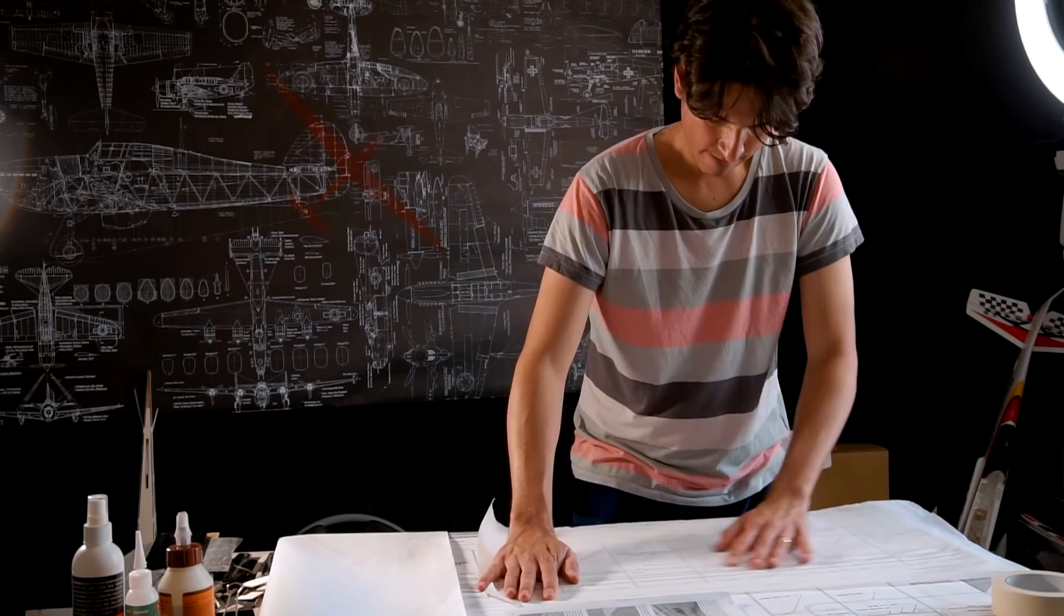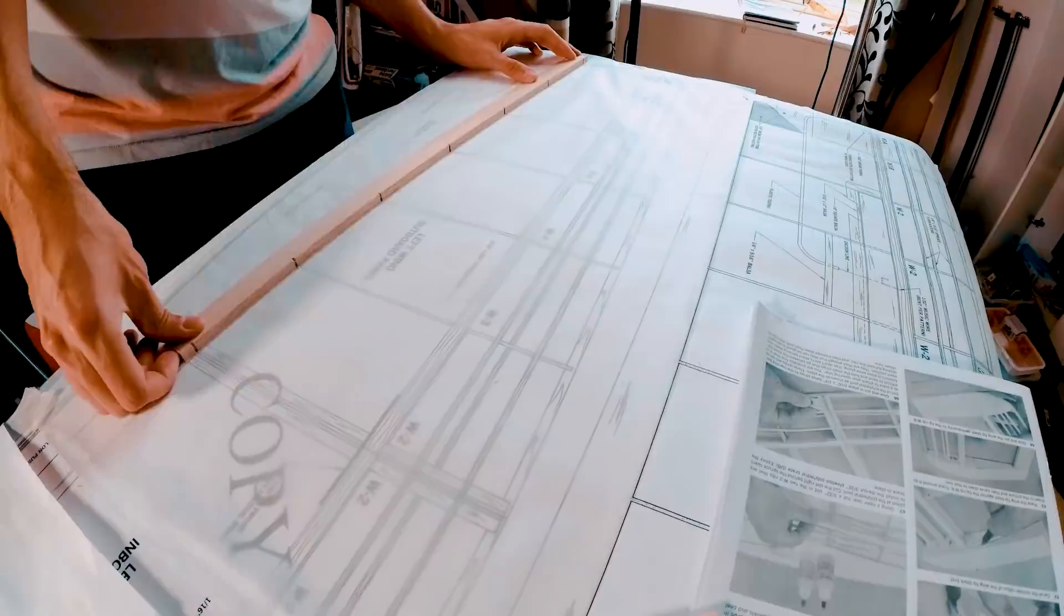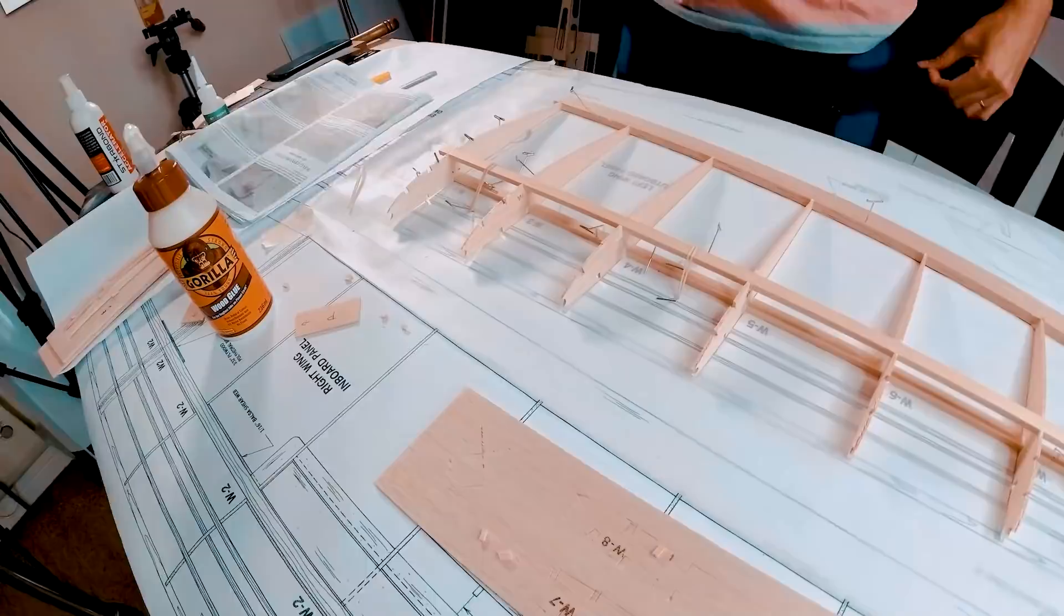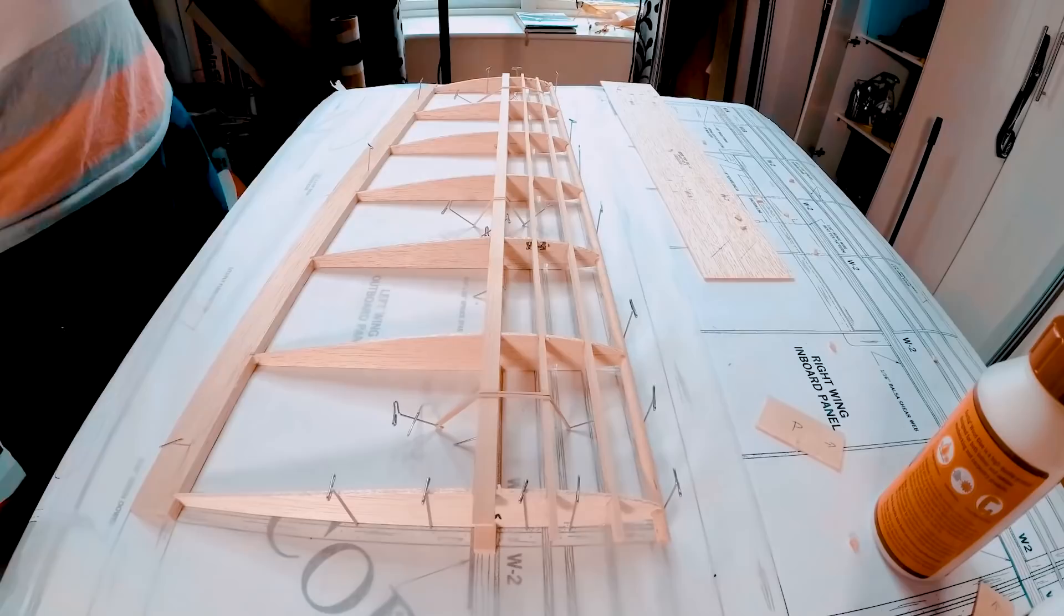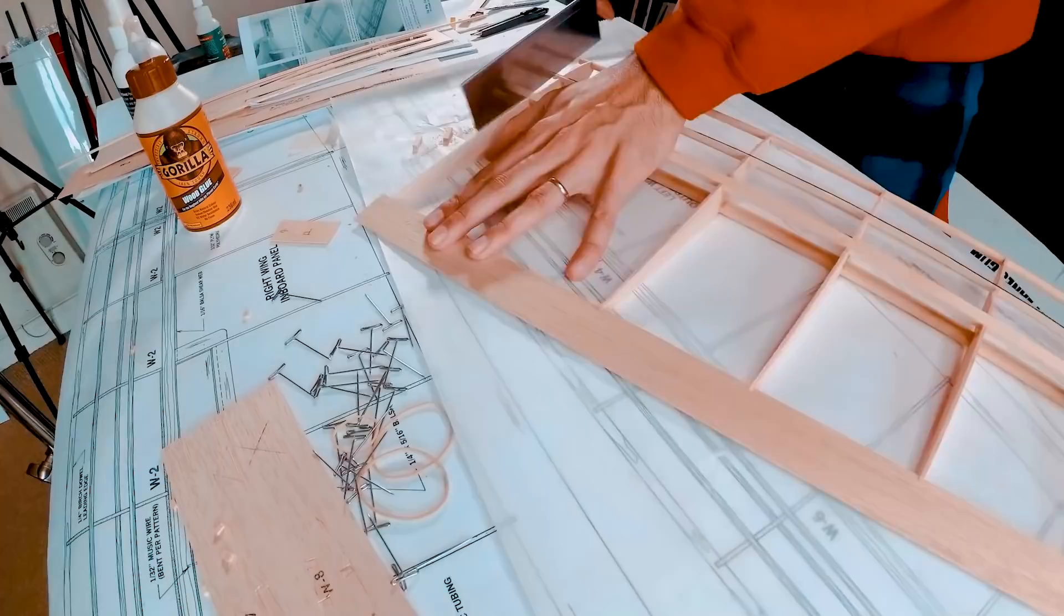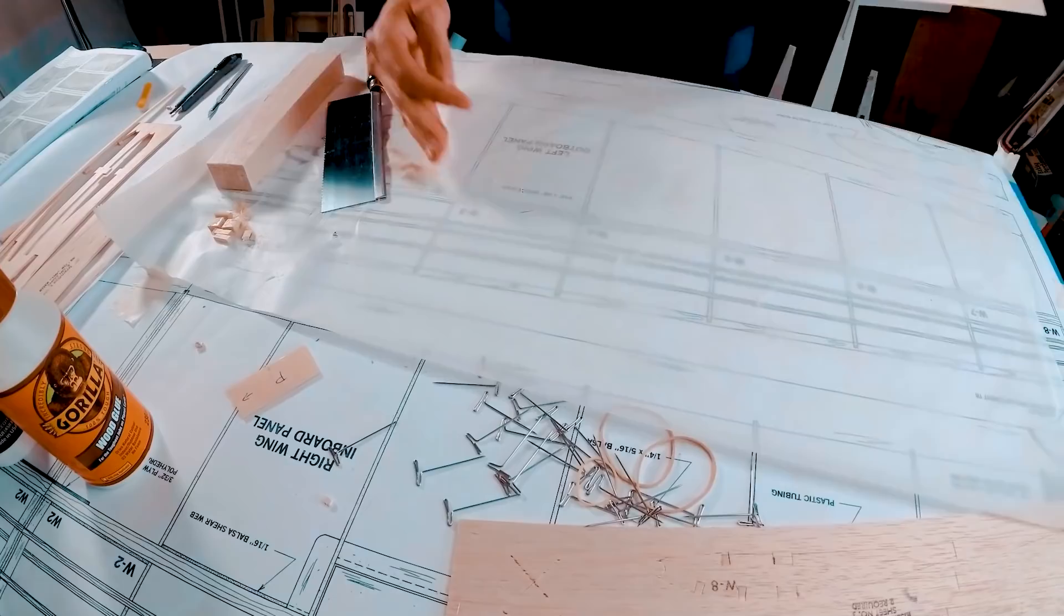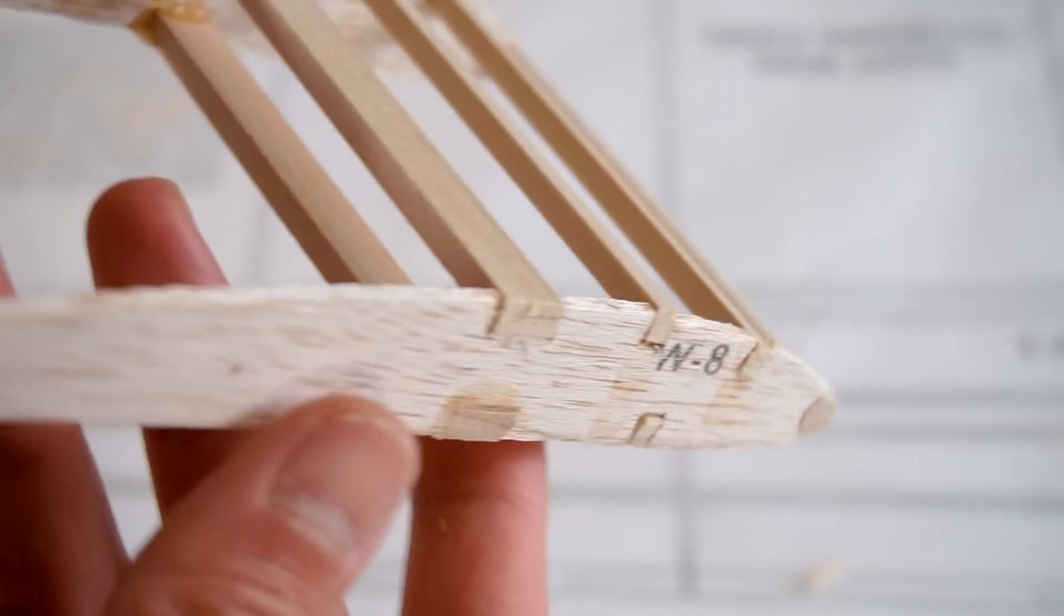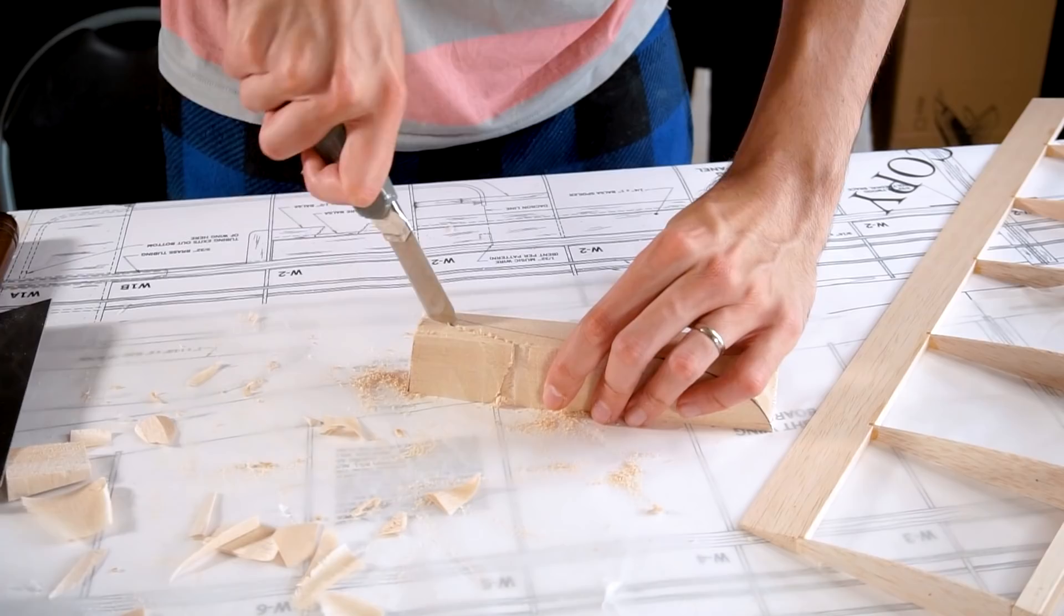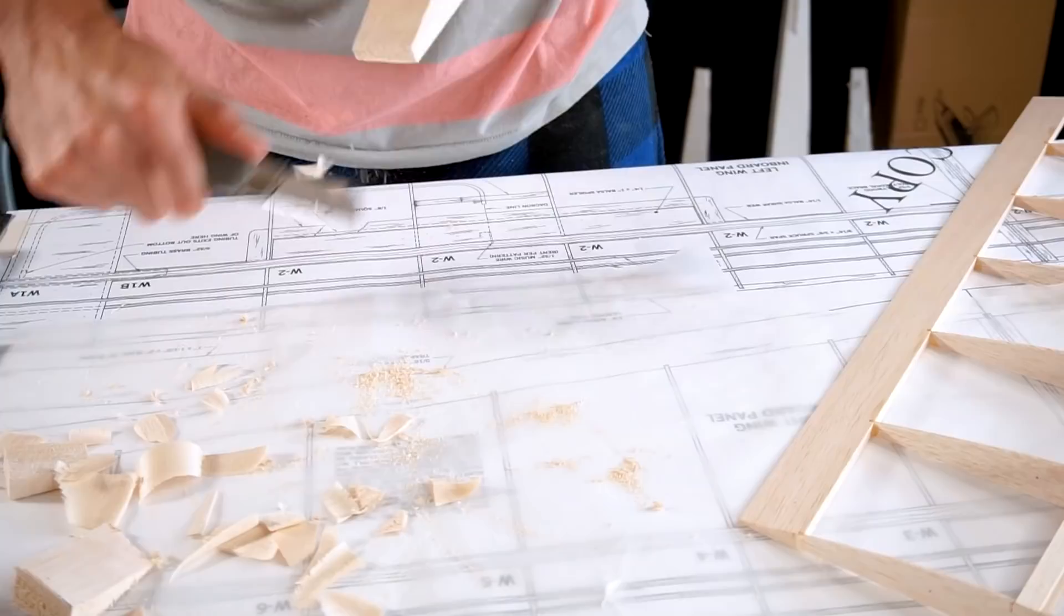Finally I'm going to finish building the wings. I'm going to use this baking paper to protect the plans and start building.